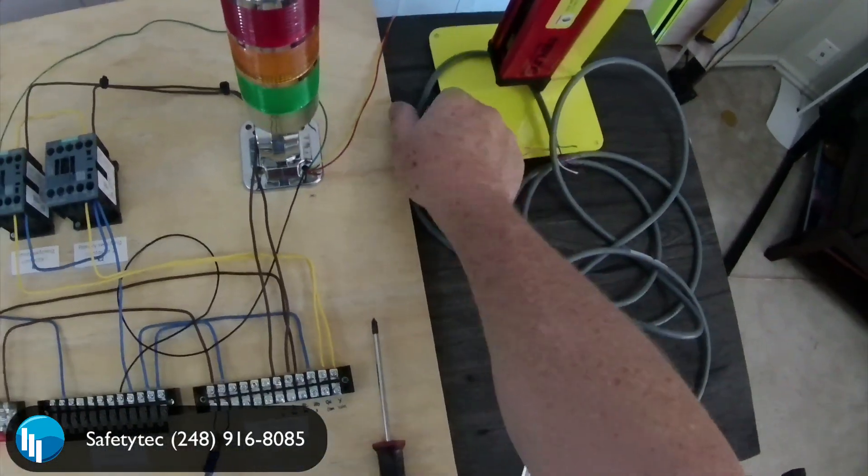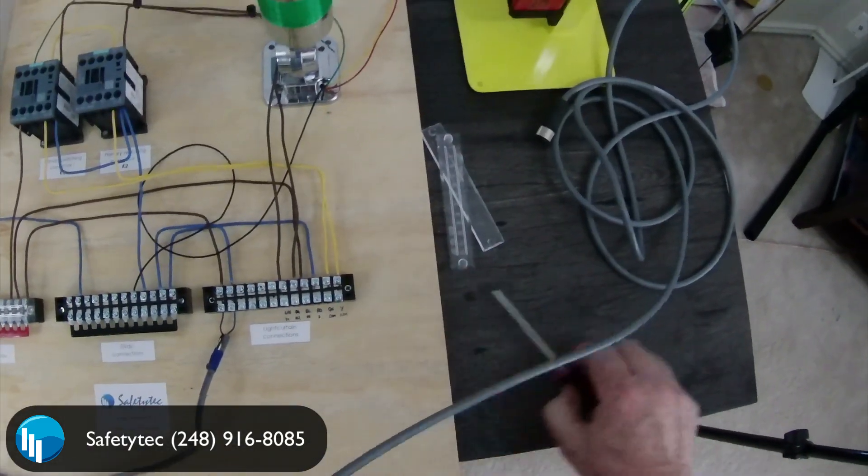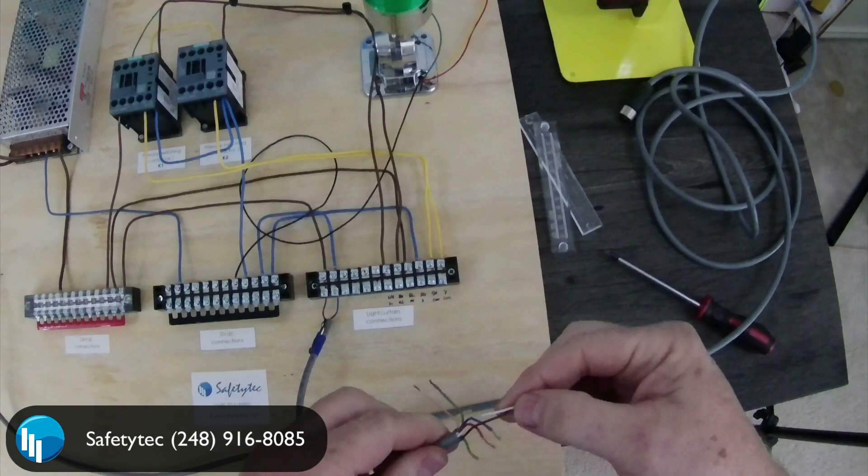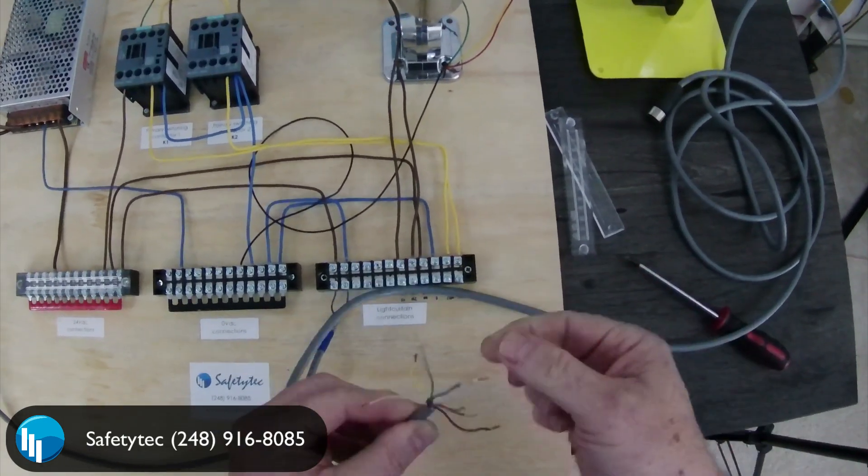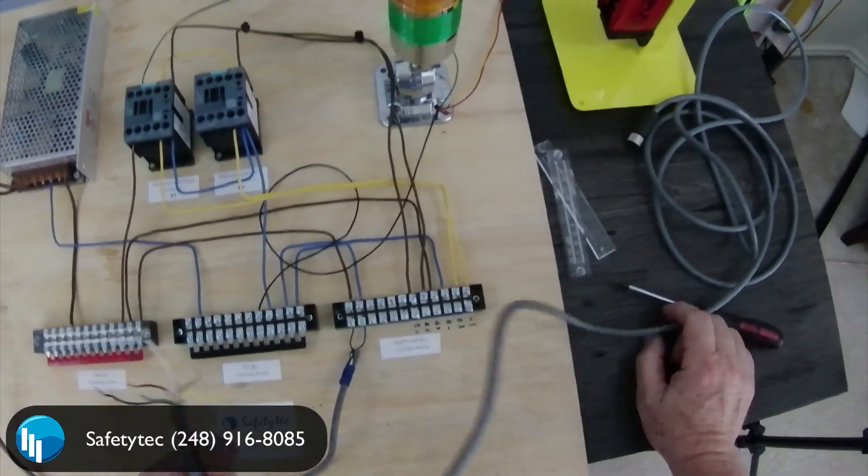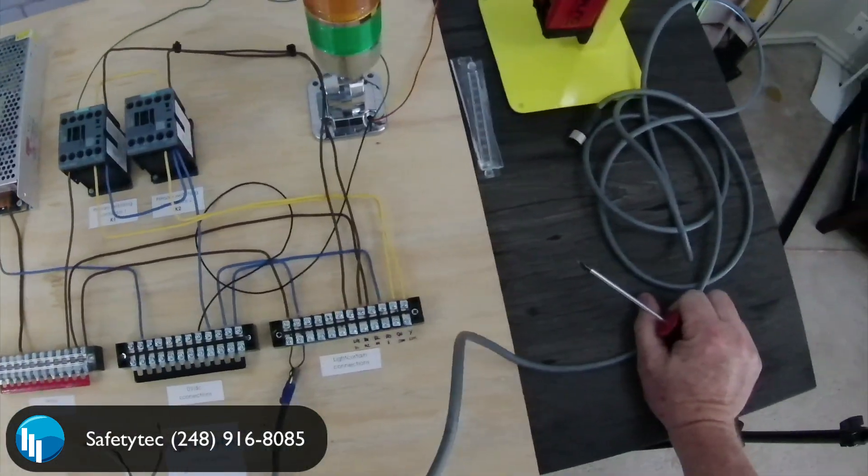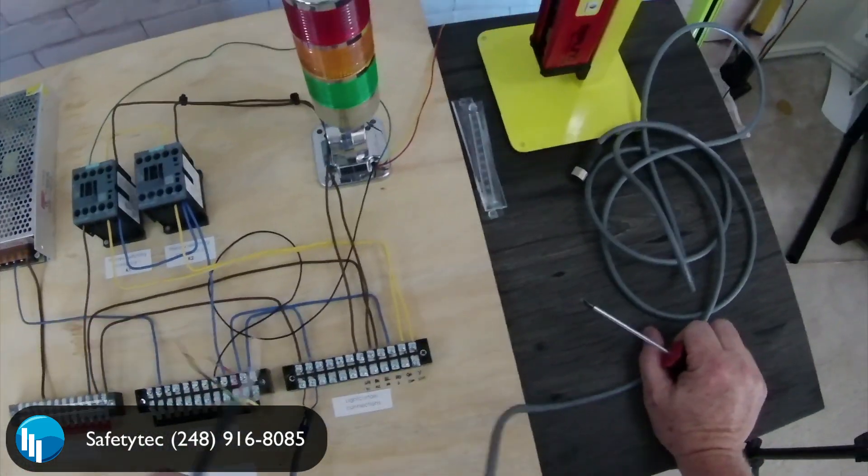Okay, so now we're going to wire up the receiver. This is where all the action happens. Now, the RED4 does not need a control unit. It does not need to be wired into any other device at all. All the electronics are built into the RED4. This will directly control the machine without the need for any kind of interface unit at all.